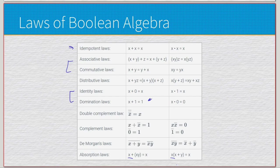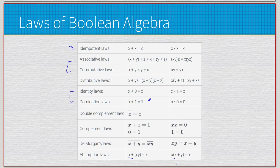Obviously having these laws as a reference when working through a complex expression is very helpful. Some will become very straightforward — like double complement, complement laws, identity laws, and domination laws — you'll notice these out of habit. Noticing when and where to use things like the distributive law or De Morgan's law gets into the more complex parts of simplification.